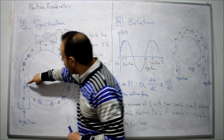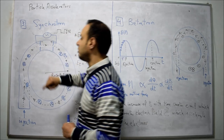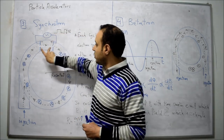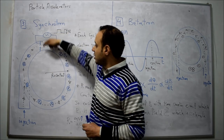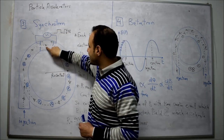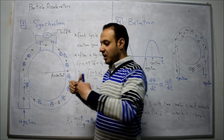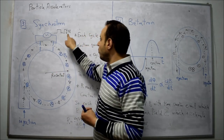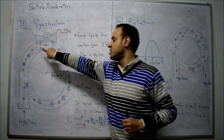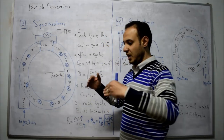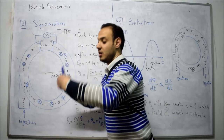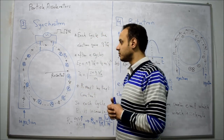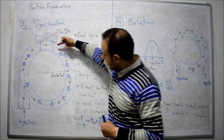So the electron will move in a circle until it reaches the plates. The electron will find a positive voltage on one plate and a negative voltage on the other. So it will be accelerated and take energy equal to Q×Va, the voltage between these two plates. The particle will be increased in speed and accelerated.